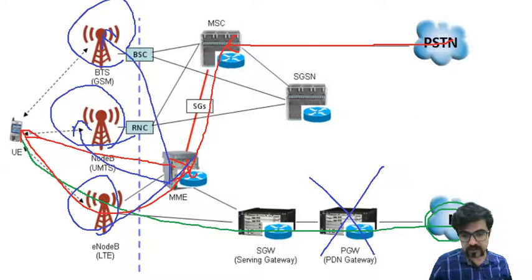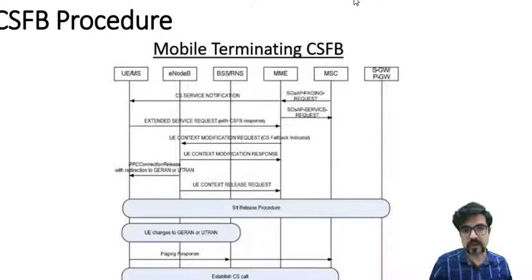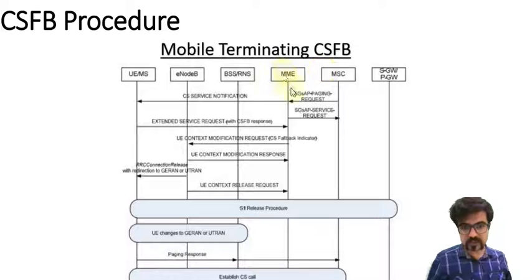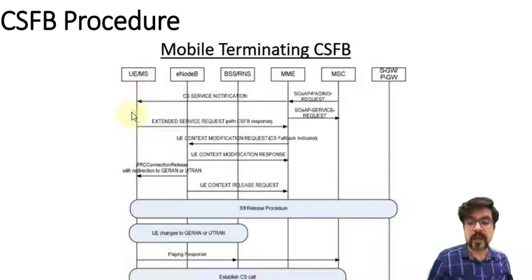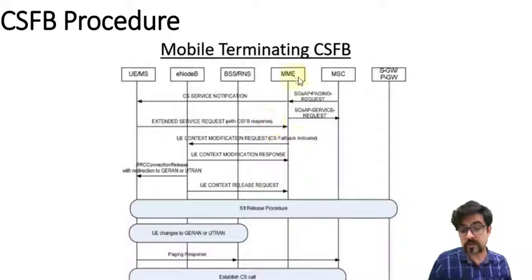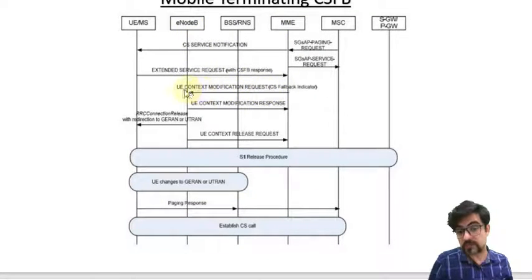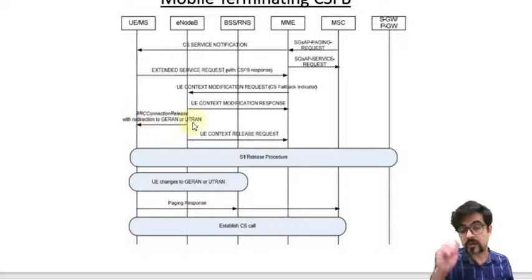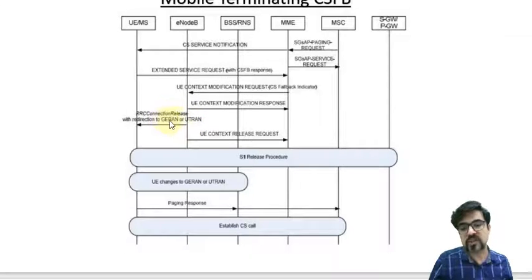In order to have a better understanding, let's take a look at the procedure step by step. We have circuit switch procedure towards terminating. There is an MSC paging request from MSC towards the MME, and MME directly towards the UE, and there is something like an acknowledgement. The UE will send an Extended Service Request with circuit switch fallback response. There is communication between MME and eNodeB, saying you should have UE context modification, release everything and do the rest. And here eNodeB is saying: okay, RRC Connection Release with redirection to GERAN or UTRAN. So there is S1 release and the rest of the things.